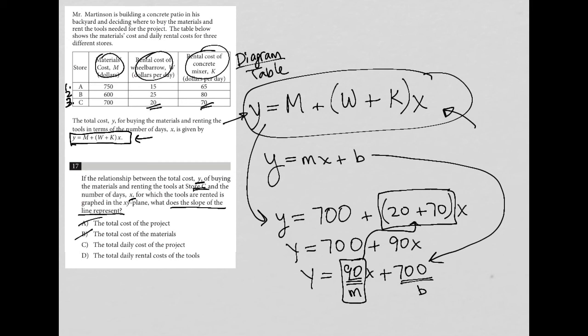Choice C, the total daily cost of the project — no, because that's just saying X equals one, if we had it for one day. That's not the slope, so C is out. Choice D, the total daily rental costs of the tools — yes, because this 90, which is our slope, comes from 20 plus 70, which is the daily rental costs for the tools. So choice D is the best answer.